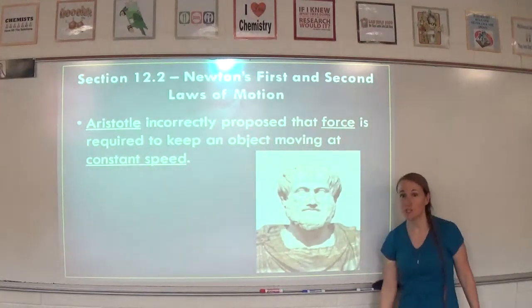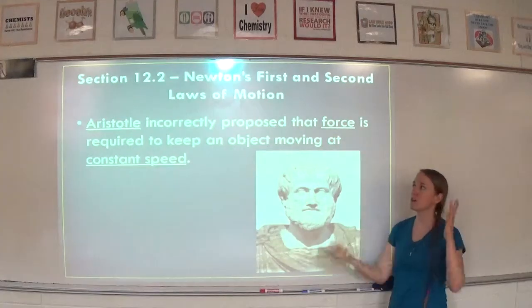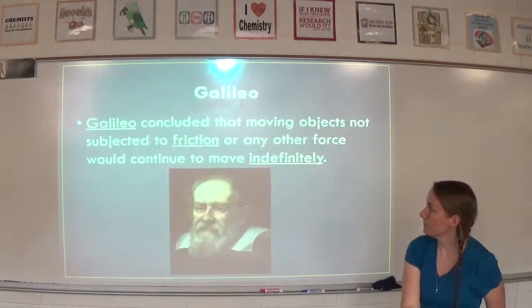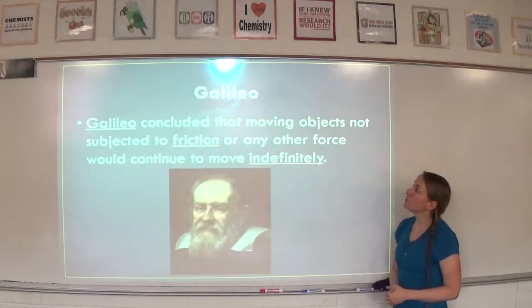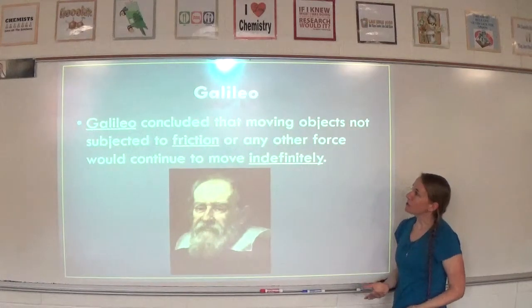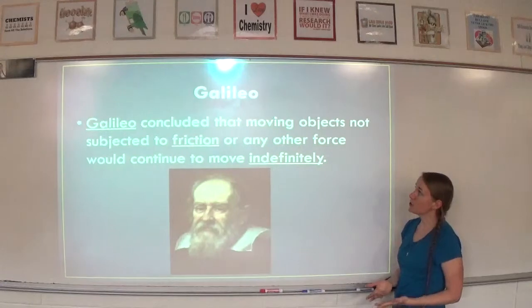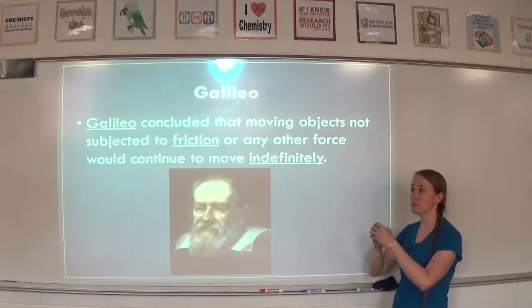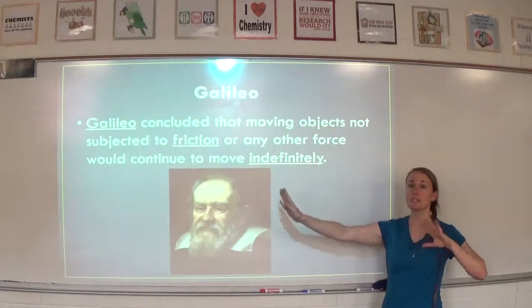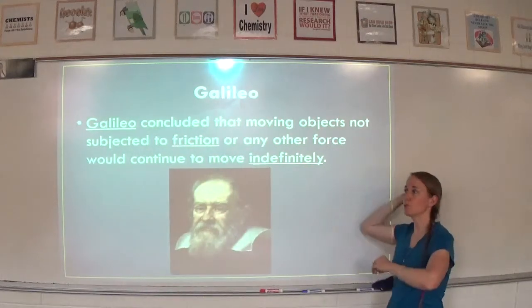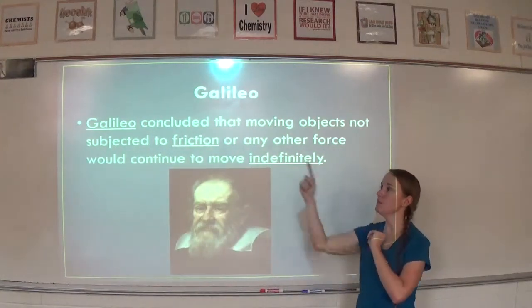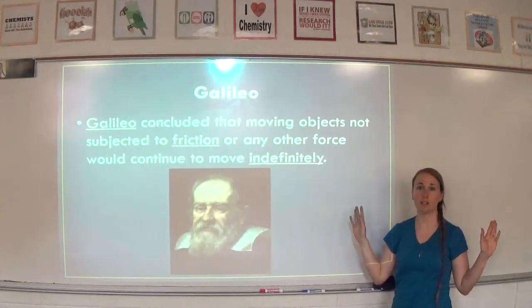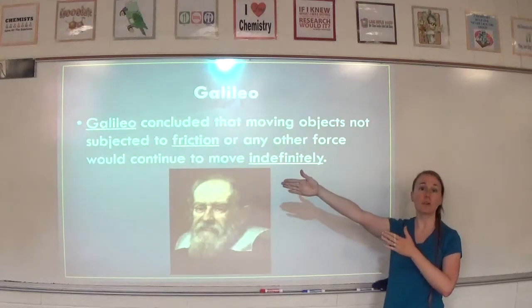Now of course we know Aristotle is very smart and made lots of discoveries, but this was one that was actually wrong for him. Galileo concluded that moving objects not subjected to friction or any other force will continue to move indefinitely. If you had no air resistance, no gravity, and you throw a baseball, it's just going to keep going in the same direction at the same speed until some other force acts on it — otherwise it just goes on forever.